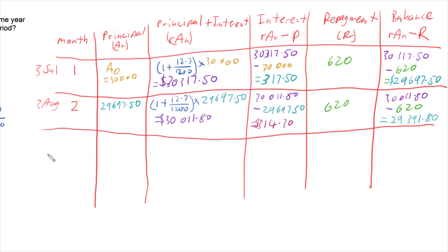So we now do this for the next month. So that gets us to the 3rd of September for our third month in a row. And so we bring down our balance from the previous month, 29,391.80. We then multiply by little r to get our principal plus interest. So at the end of this month, we have $29,702.86 owing. We then minus off our principal so we get our interest. So we have $311.06 of interest paid this month by the 3rd of September.